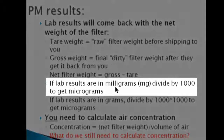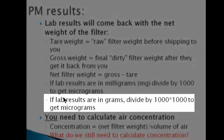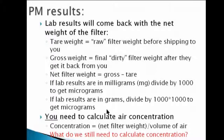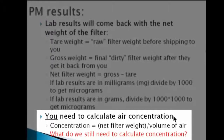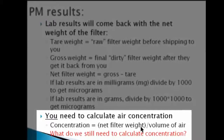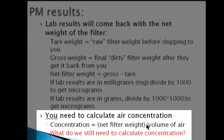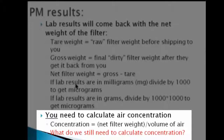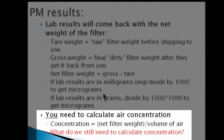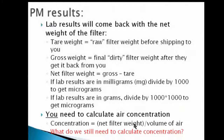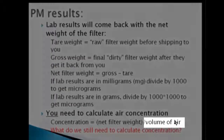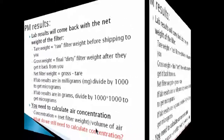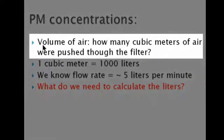You may get lab results in milligrams or grams. You want to get air concentration in micrograms per cubic meter. So if they give you results in grams or milligrams, convert that to micrograms. You still need the volume of air that passed through that filter. We know one cubic meter — one large box, one meter on a side — contains 1,000 liters. And we know our flow rate was just about five liters per minute. So we need the number of minutes to calculate the number of liters.